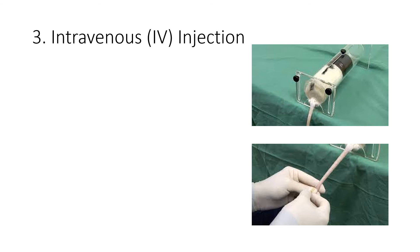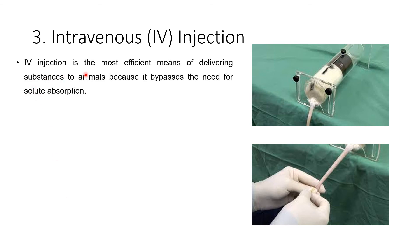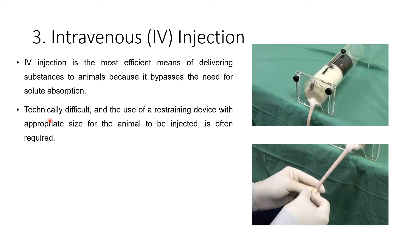The next is intravenous injection. Intravenous injection is the most efficient means of delivering a substance to an animal because it bypasses the need for solute absorption. Technically it is difficult, and the use of a restraining device with the appropriate size for the animal to be injected is often required. We place the animal into the restraining device in order to hold it, and an appropriate-sized animal holder is needed.